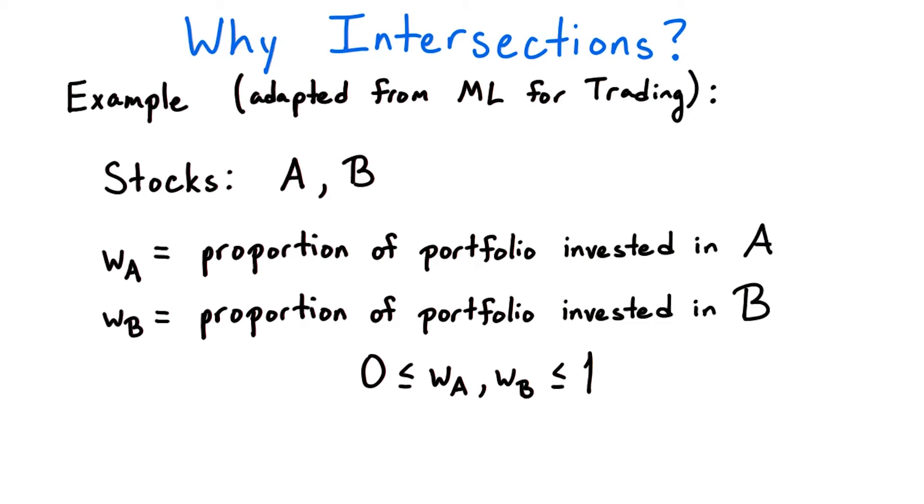Let's denote the proportion of each in my portfolio by W_A and W_B, which are weights between 0, meaning none of that stock is in the portfolio, and 1, meaning that the portfolio is entirely that stock. Note that W_A and W_B have to add up to 1, since any portion of the portfolio that isn't A must be B. This gives me the linear relationship W_A + W_B = 1.